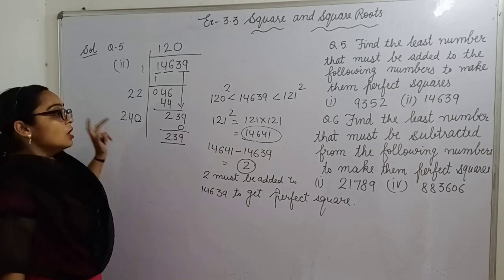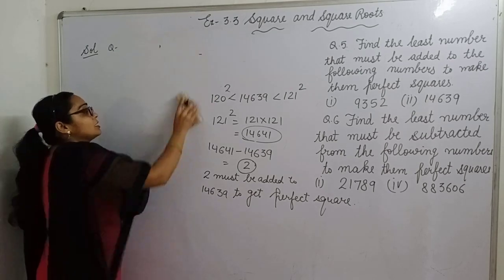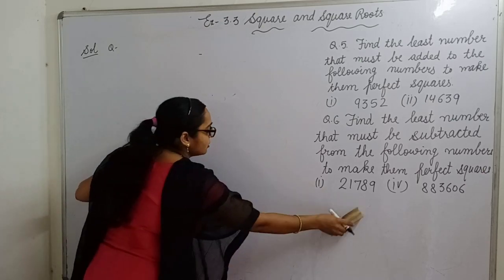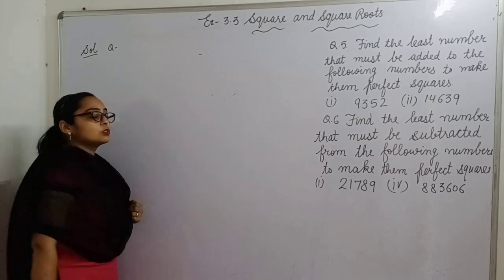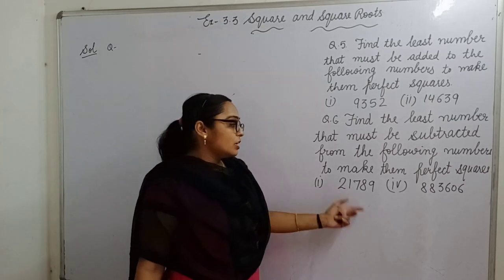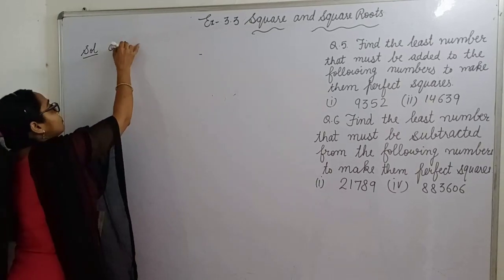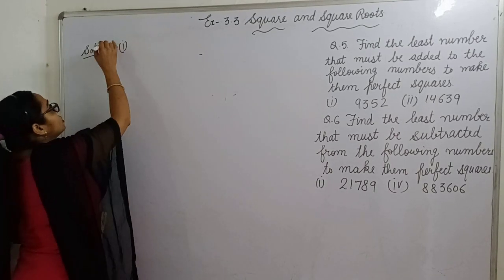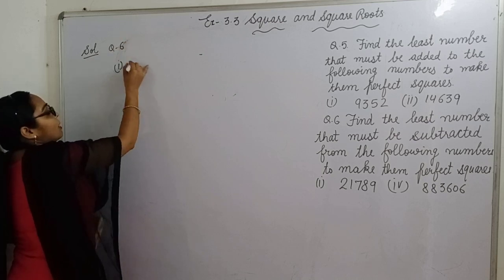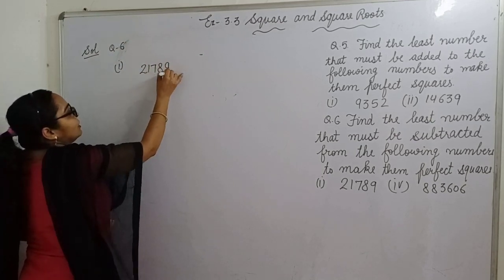Now let's move to question number 6. It is similar to the previous question but with a little change. In this question, we have to find out what we must subtract so that the number becomes a perfect square. First part of question 6: 21789.